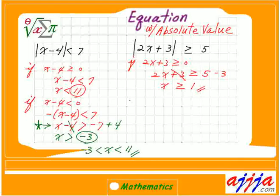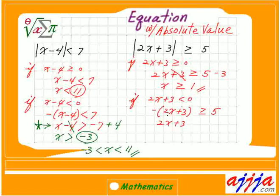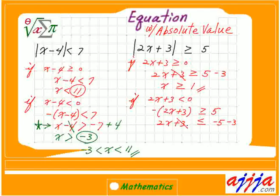Now what if 2x plus 3 is less than 0? That's a negative number, so you have to put a negative sign on it. So negative of 2x plus 3 is greater than 5. You multiply everything by negative, so 2x plus 3 is less than negative 5. Change the direction of the sign. Subtract 3, which gives negative 8. Divide by 2, which gives x is less than or equal to negative 4.